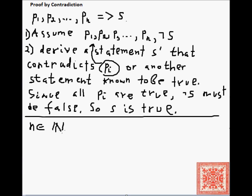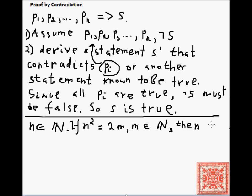Here's a simple example. Let's take a natural number n and take its square. Let's assume that the square of n is even, where n squared equals 2m and m is a natural number. We're going to show that if this is true, n is also even — that is, n is equal to 2 times l, where l is a natural number. In other words, if the square of a natural number is even, so is that natural number.